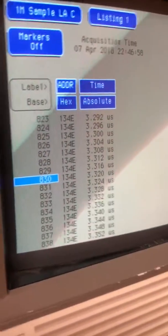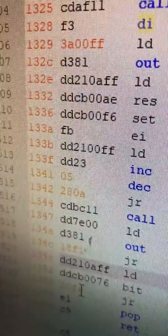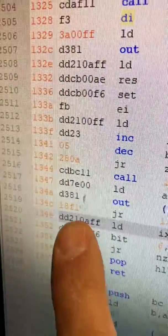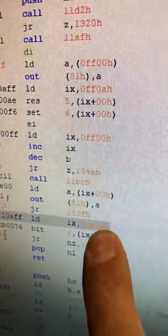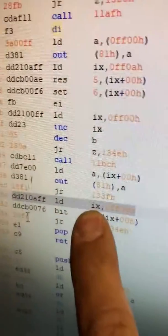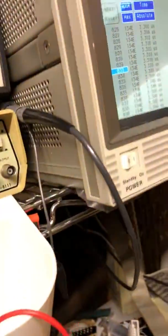All right, so it starts here at 134E, which is there, loads an address into a register and it goes through...